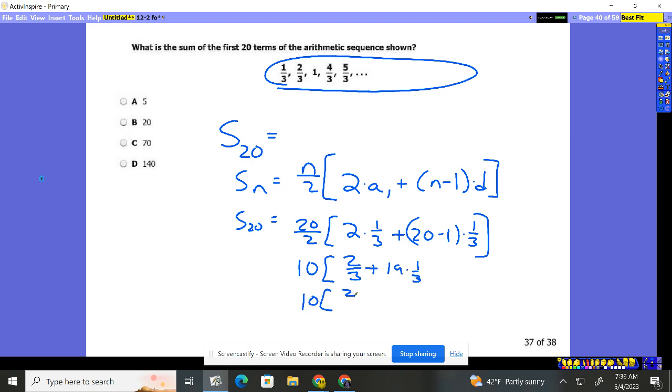So it's 20 times two-thirds plus 19 thirds. So it's 10 times 21 thirds. So it's 210 because this is really one divided by three gives me 70.